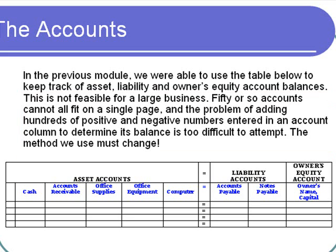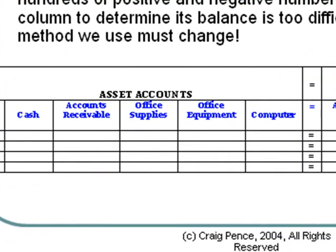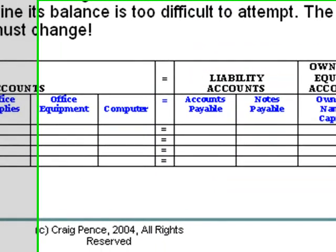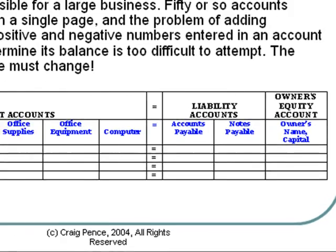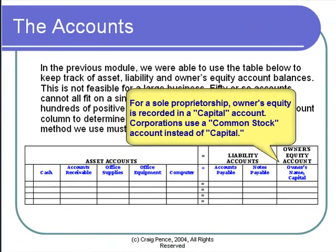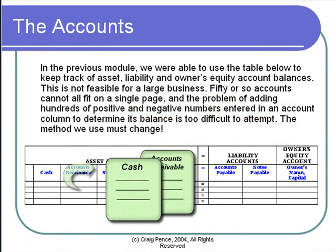In the previous module, we recorded increases and decreases in account balances using a table such as is illustrated here. That system is perfectly usable. However, as the business becomes larger, it becomes a little difficult to apply, as the business will need to maintain many more accounts than are illustrated here. The single sheet of paper soon becomes too small to hold them all. So a solution is to use a single sheet of paper for each account instead.